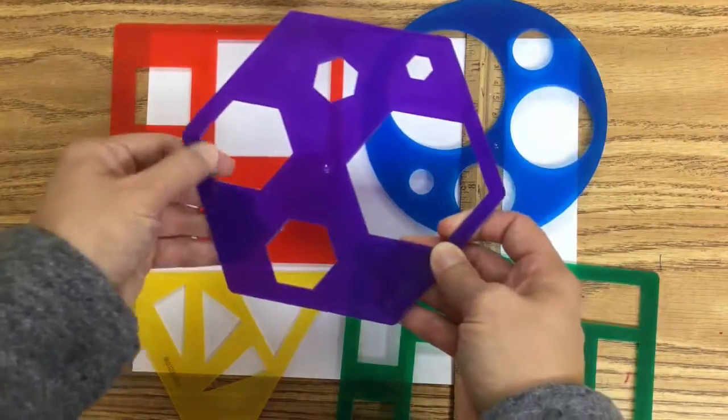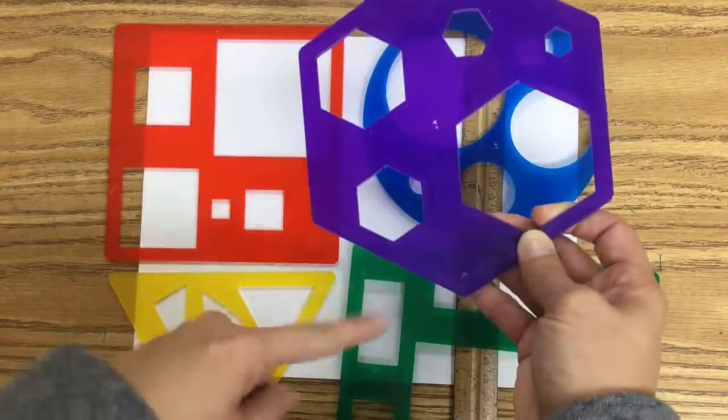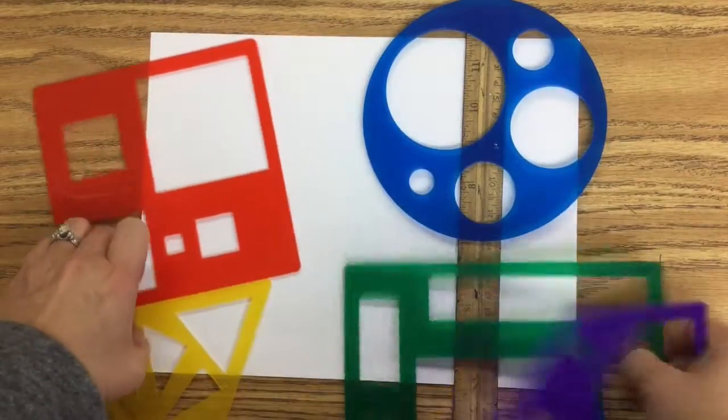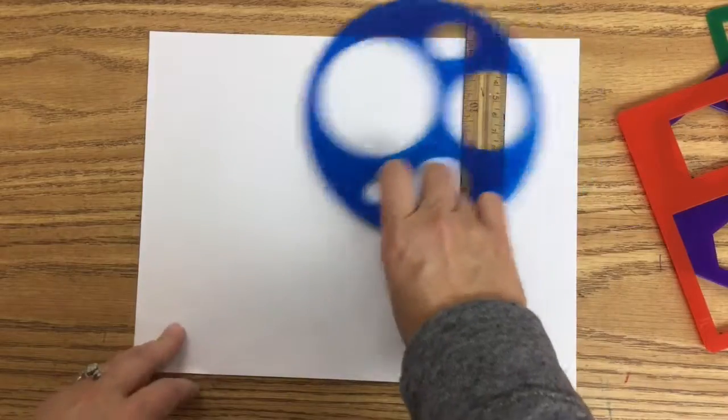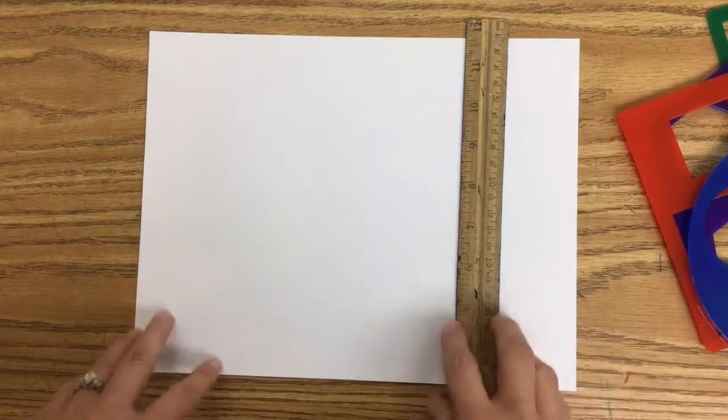They tend to have straight edges and pointy corners for our geometric shapes. Some of them were more organic and free-flowing with curves and circles in natural forms.